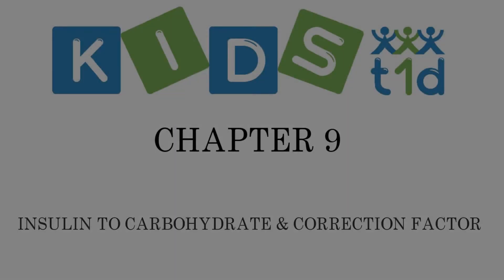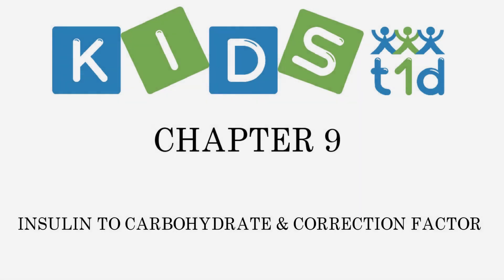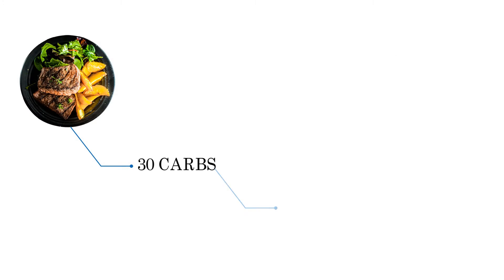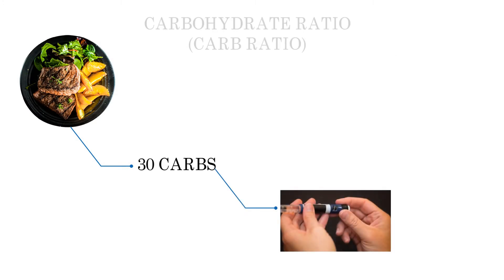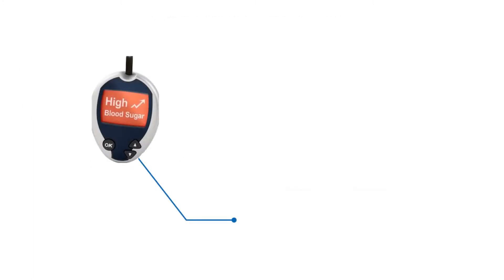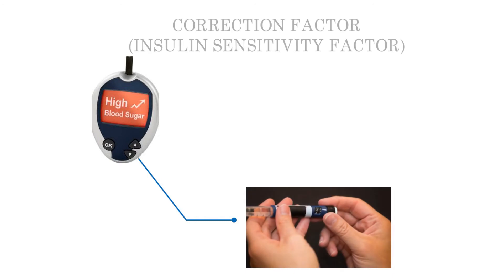Chapter 9: Insulin to Carbohydrate and Correction Factor. In this chapter we will look at the insulin to carbohydrate ratio, also called the carb ratio, and the correction factor, also called the insulin sensitivity factor.